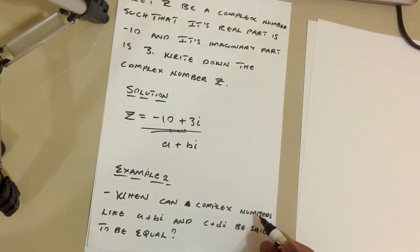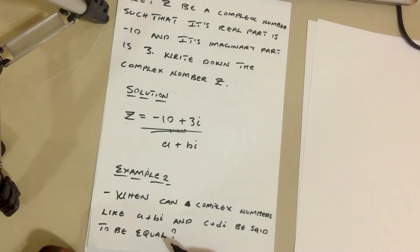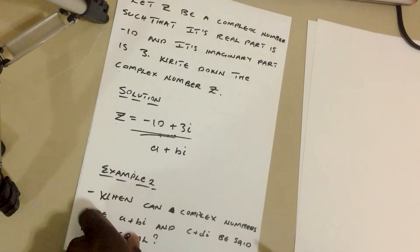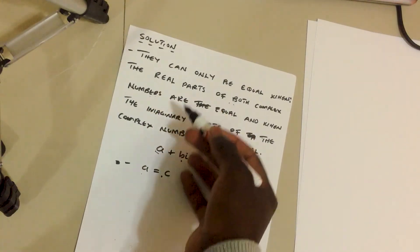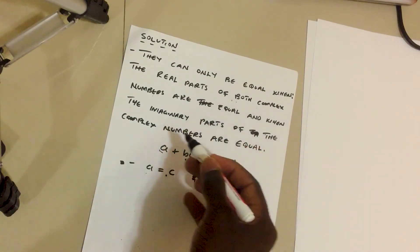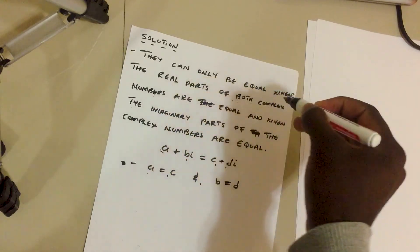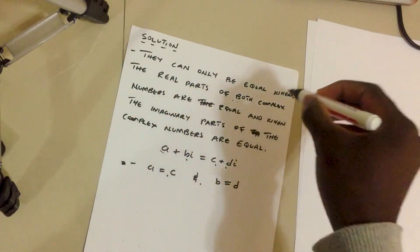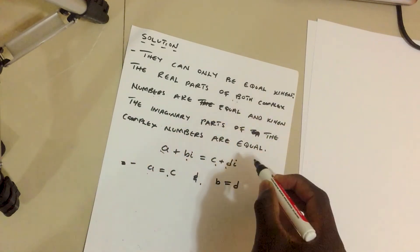We have another example: when can two complex numbers a plus bi and c plus di be said to be equal? They can only be equal when the real parts of both complex numbers are equal, and when the imaginary parts of both complex numbers are equal.